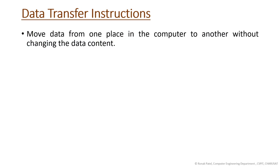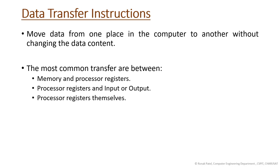Data transfer instruction moves data from one place in the computer to another without changing the data content. Most transfers are between memory and processor register, processor register and input/output, and processor registers themselves — either getting data from memory to register, register to memory, or processor register to any I/O device.